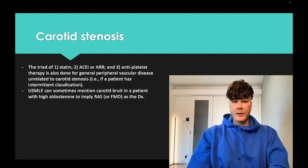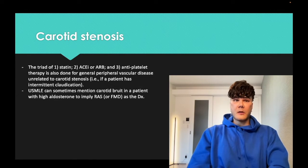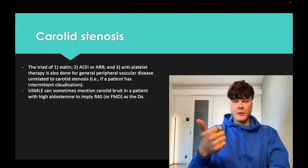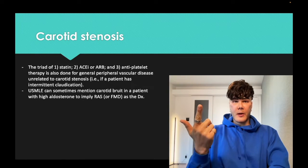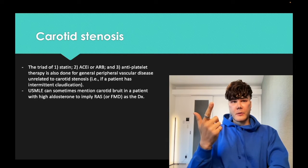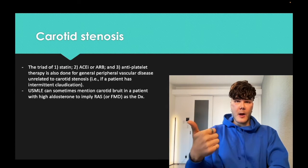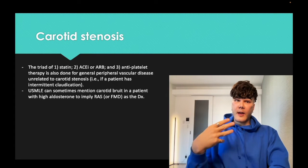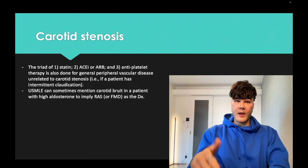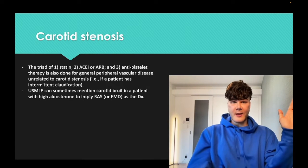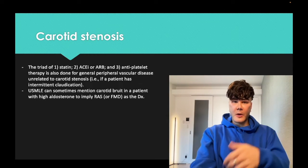An interesting point about carotid stenosis: if they give you a patient with high aldosterone and high blood pressure and carotid bruit, you can make the association that atherosclerosis in one location — the carotids — means it's also in others: the popliteals, coronaries, renal arteries. That's how you know the diagnosis could be renal artery stenosis with high aldosterone, as opposed to an aldosterone-secreting tumor. Fibromuscular dysplasia can also occasionally affect the carotids — that's narrowing of the renal arteries in young women, not related to atherosclerosis.